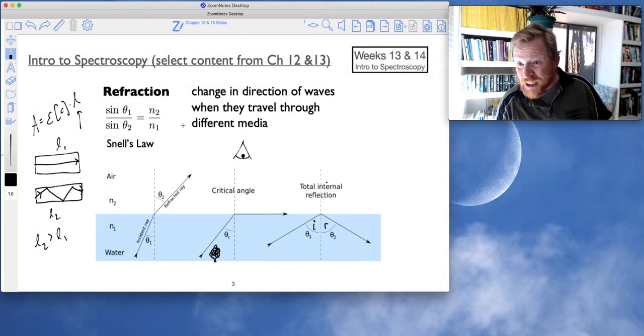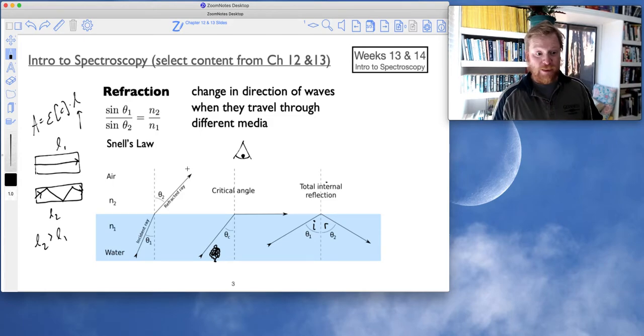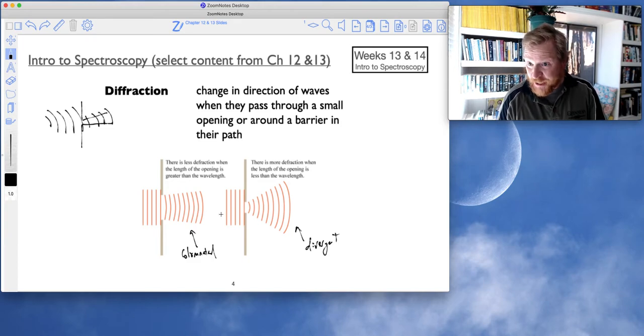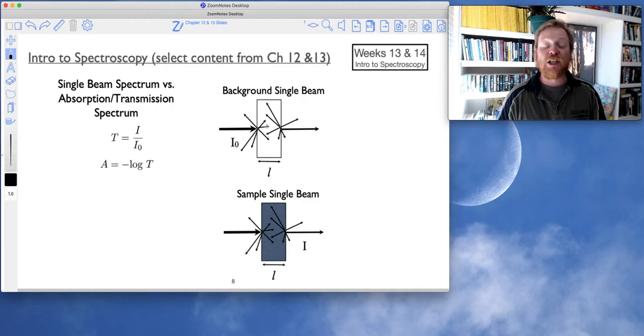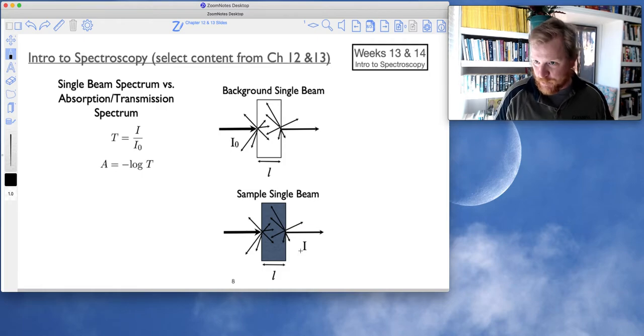We can get refraction if the light is passing through multiple different types of media, which it certainly is in spectroscopy. It passes through the air, and then it passes through your glass cuvette, and then it passes through the liquid in your cuvette, and then on and out through the other side. So all of these processes are important to consider, which is precisely why we take a background spectrum and then a sample spectrum. These are typically referred to as single beam spectra.